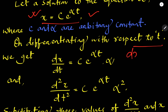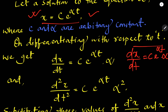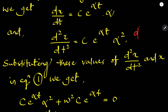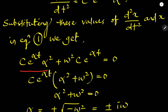We get dx/dt equal to c times alpha times e to the power alpha t, keeping c as a constant. The derivative of e to the power alpha t is alpha times e to the power alpha t. The second derivative gives d²x/dt² equal to c times alpha squared times e to the power alpha t. We then substitute d²x/dt² into the equation d²x/dt² plus ω²x equals zero.